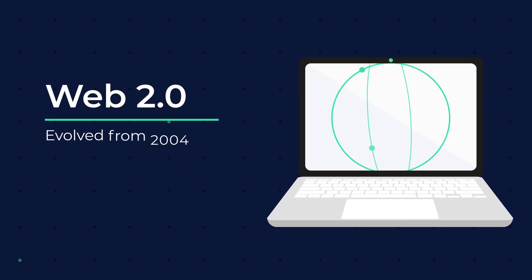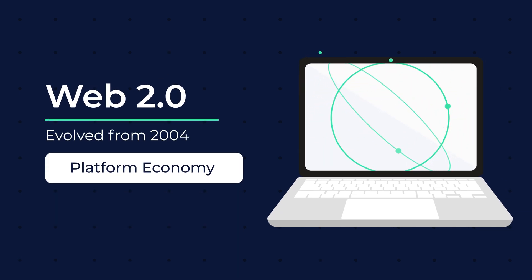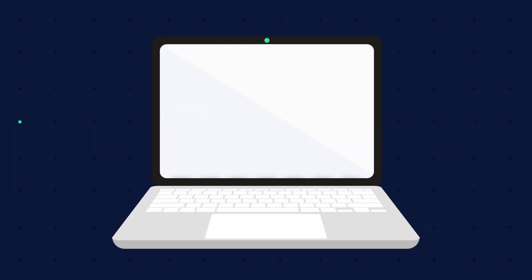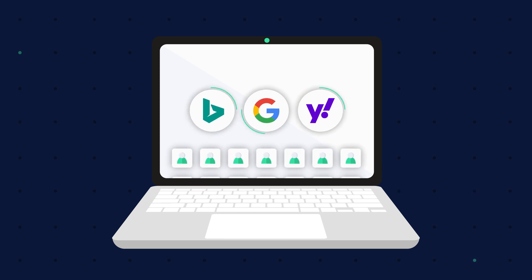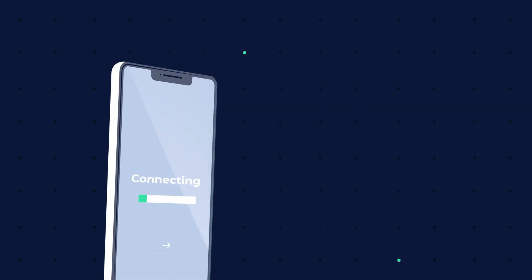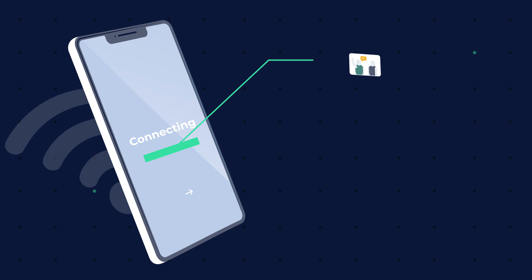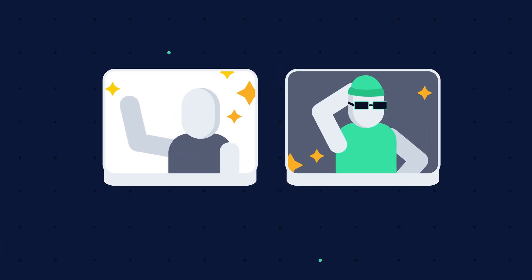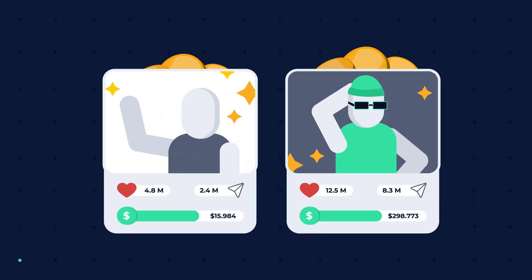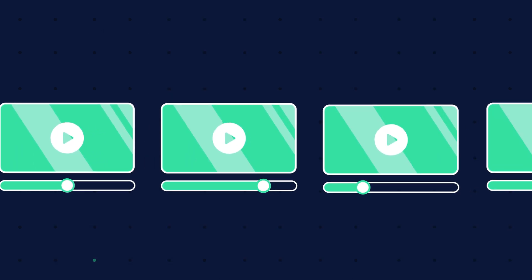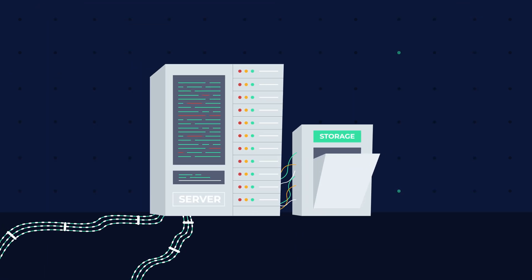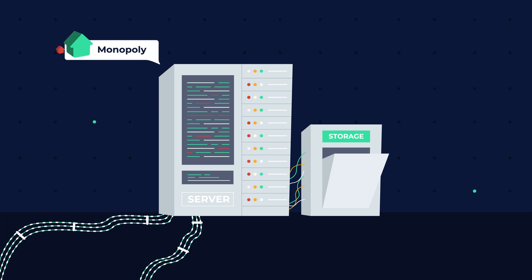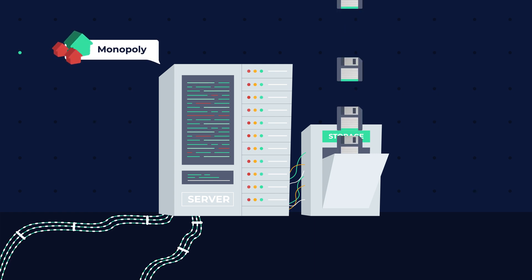Web 2.0 evolved from 2004 onward and is also called the platform economy, with the primary functions being read-write. Web 2.0 made navigation easier with the help of advanced search engines and saw a major shift towards user-generated content, which consequently made the Internet more social. Mobile first made connecting and interacting with each other as well as content creation much easier, which eventually led to the creator economy because creators were able to monetize content. Content creation and content sharing creates huge volumes of data and the need to store it. Combined with the always-on culture and cloud computing, big tech took a monopoly position alongside the demand for handling and storing user data.